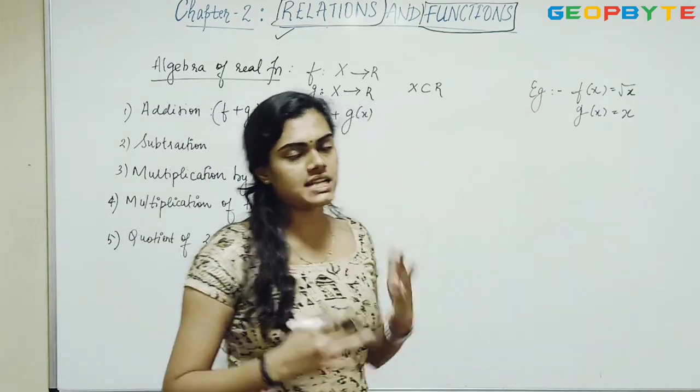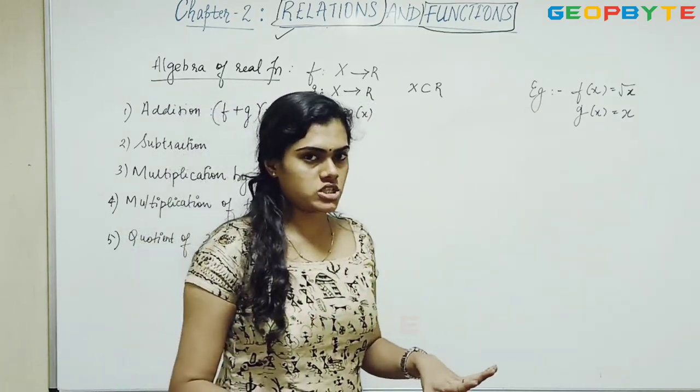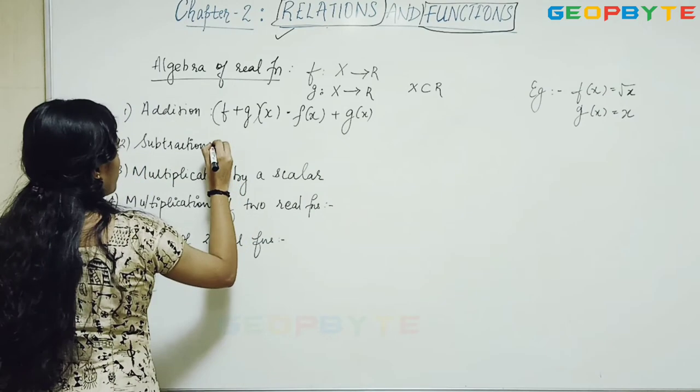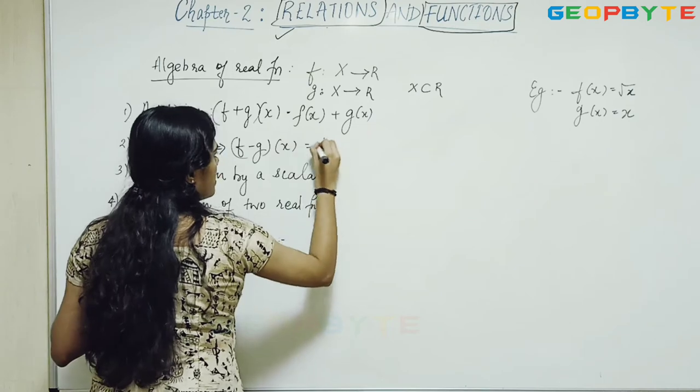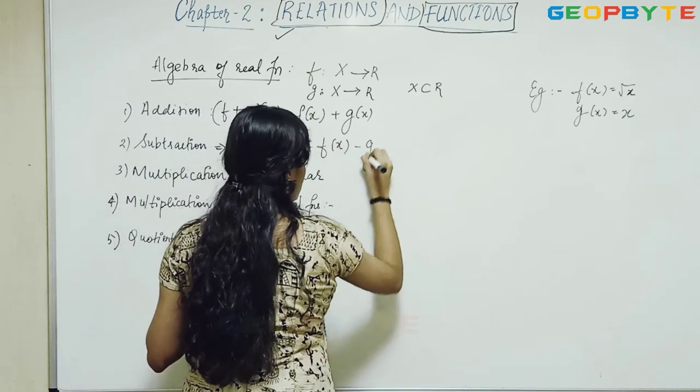Just add two functions like natural numbers or integers. Similarly, for subtraction, f minus g of x is equal to f of x minus g of x.